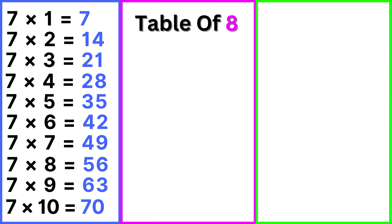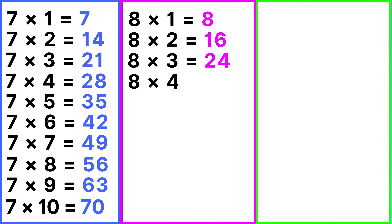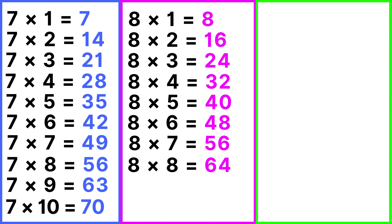Table of 8: 8 ones are 8, 8 twos are 16, 8 threes are 24, 8 fours are 32, 8 fives are 40, 8 sixes are 48, 8 sevens are 56, 8 eights are 64, 8 nines are 72, 8 tens are 80.